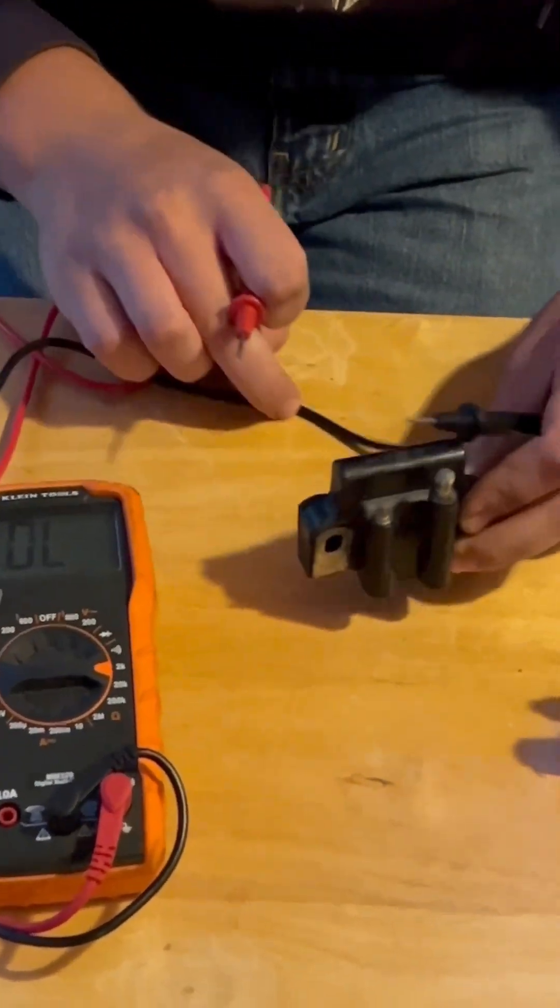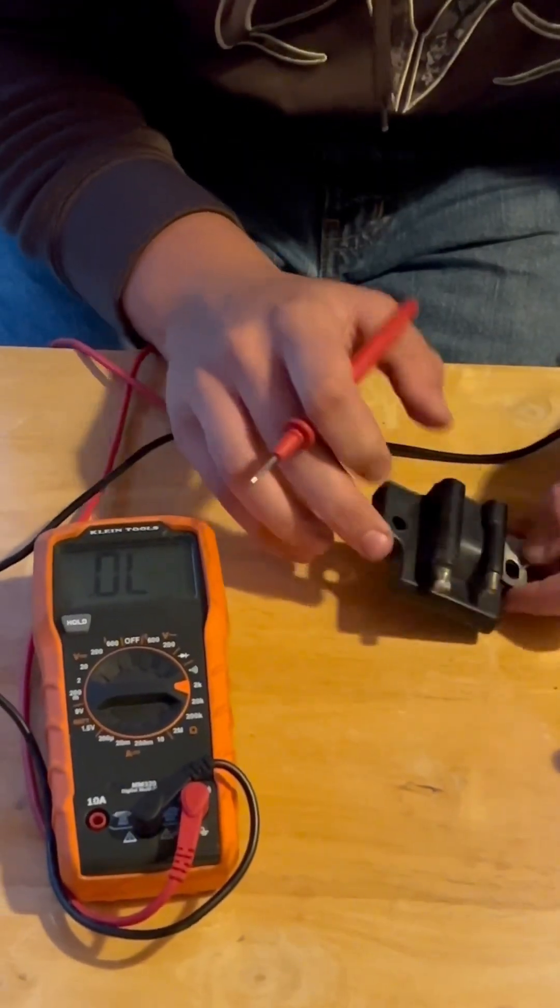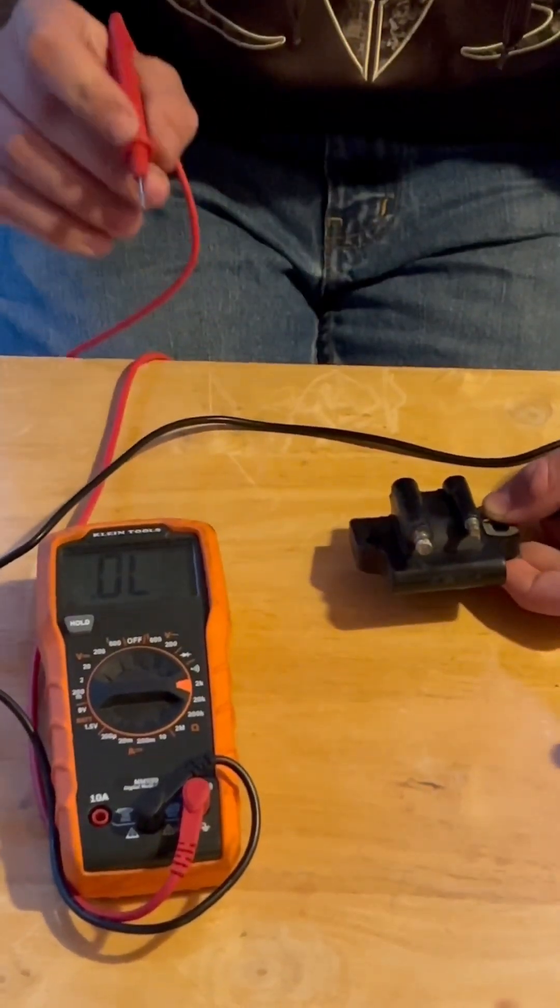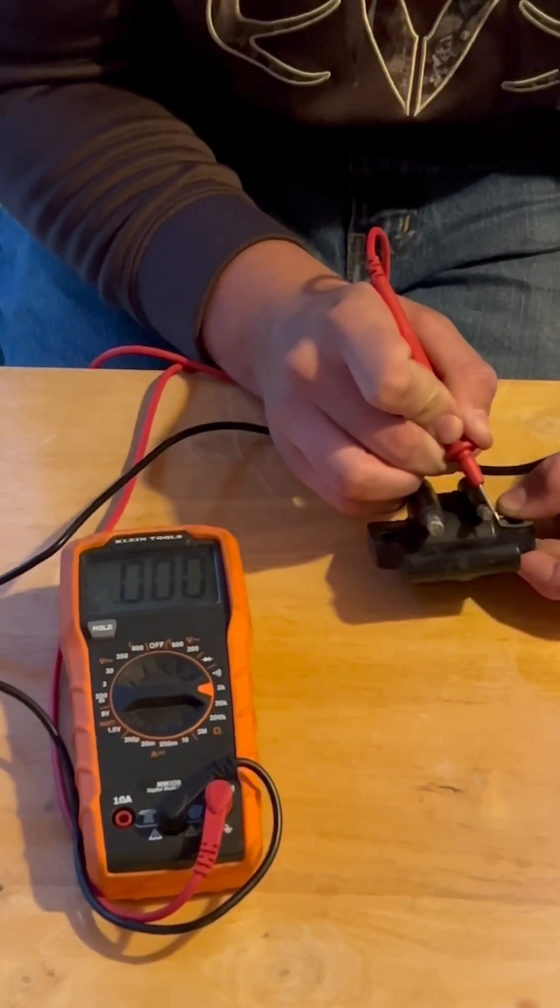First I'm going to be putting my negative lead onto the ground, the hot onto the primary. It should read a reading of zero. This one is good on that part.